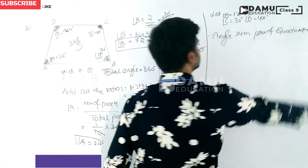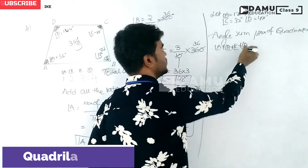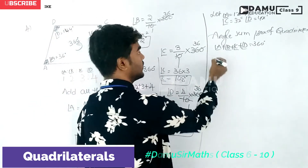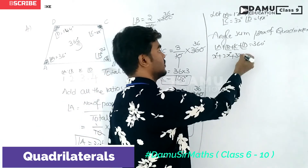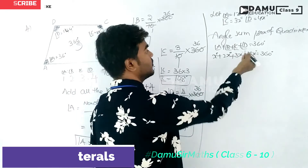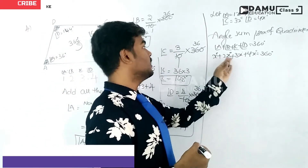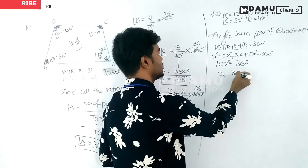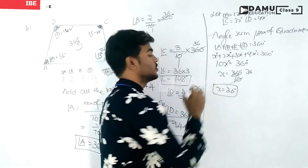Using the angle sum property of a quadrilateral: angle A plus angle B plus angle C plus angle D equals 360 degrees. Substituting: x plus 2x plus 3x plus 4x equals 360 degrees. Adding all x terms gives 10x equals 360 degrees. Therefore x equals 360 divided by 10, which gives x equal to 36 degrees.